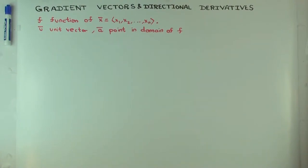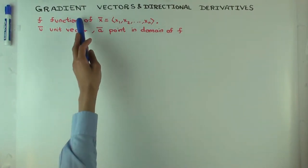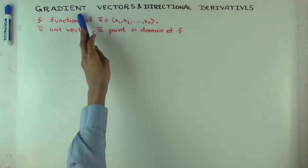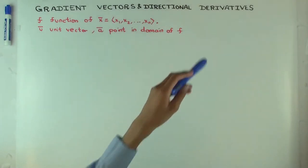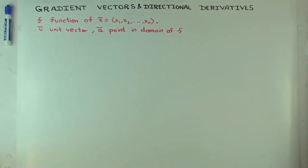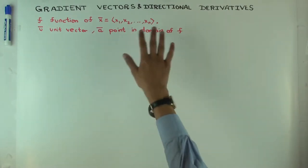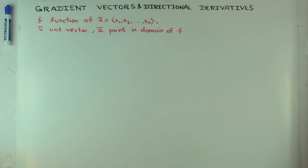In this talk, I'm going to consider the relationship between the gradient vector and directional derivatives. Before we go on, can you quickly remind me of a one-line description of what gradient vector means and what directional derivative means?